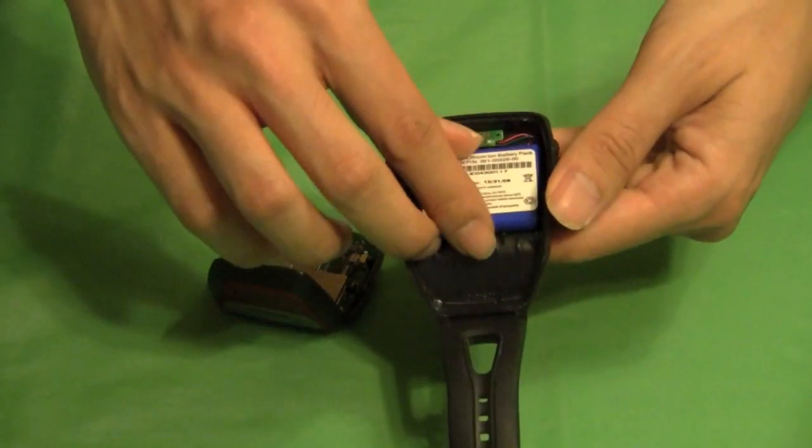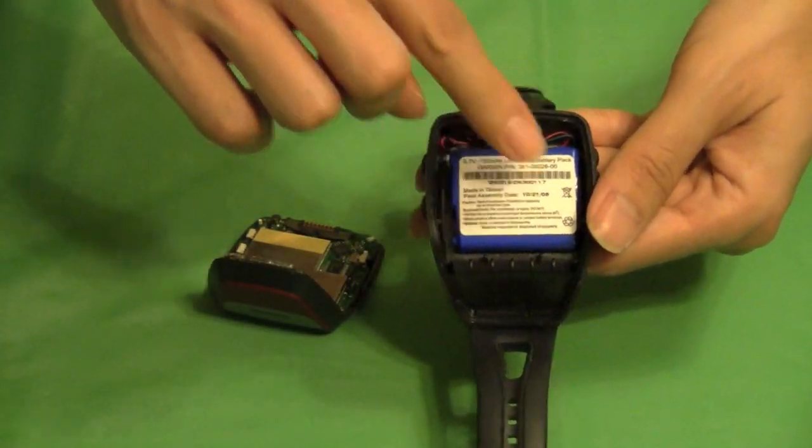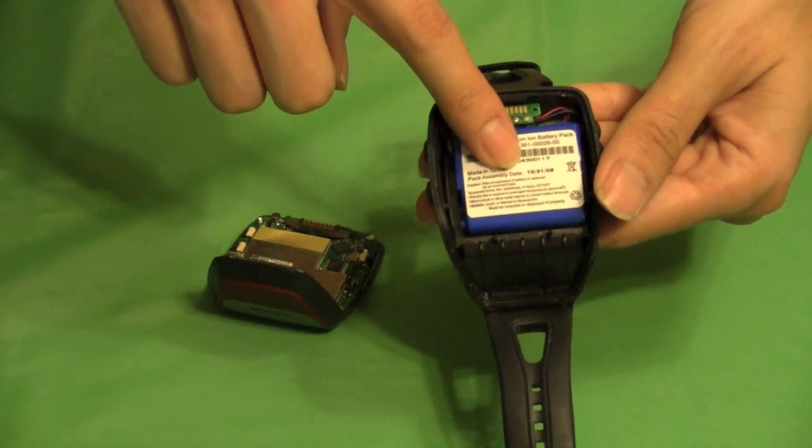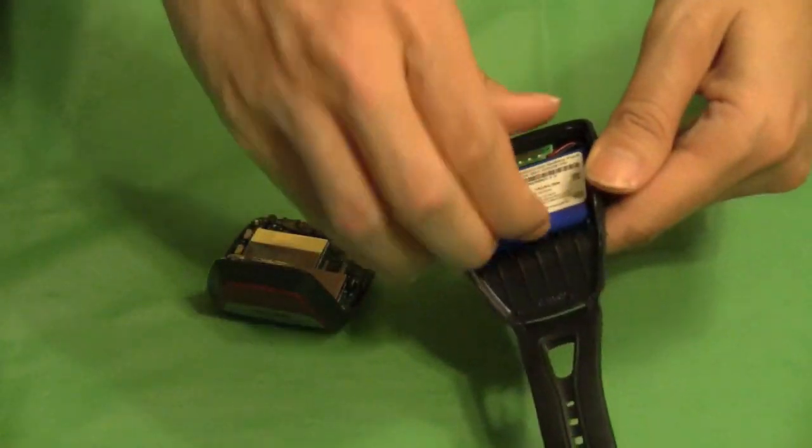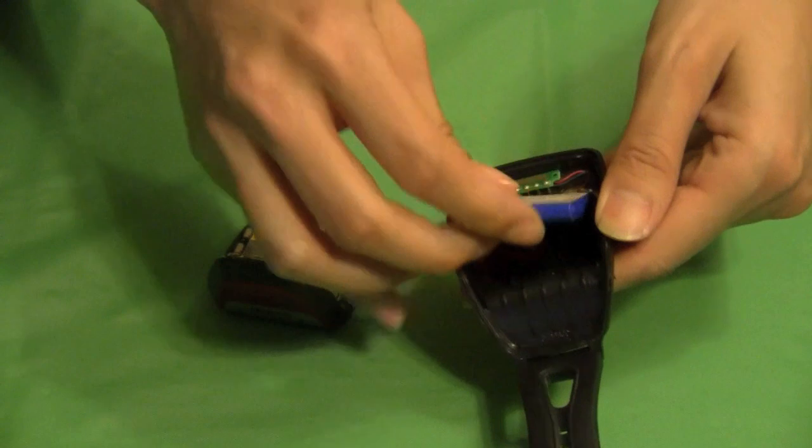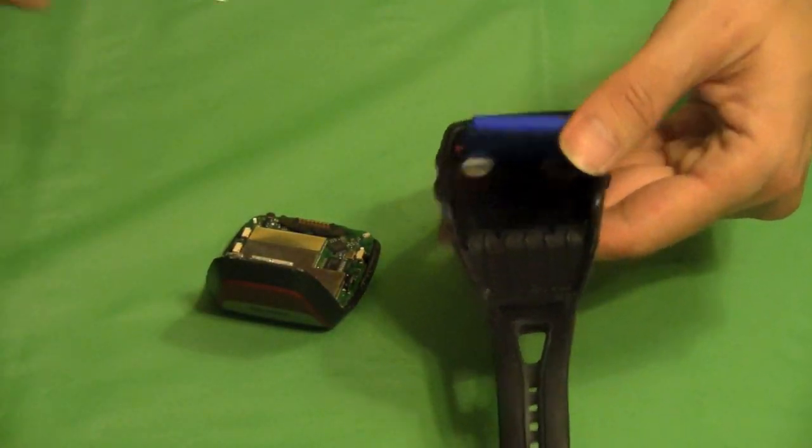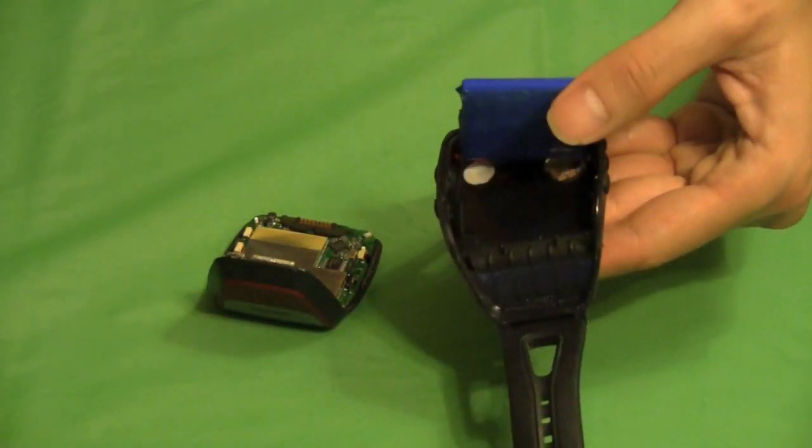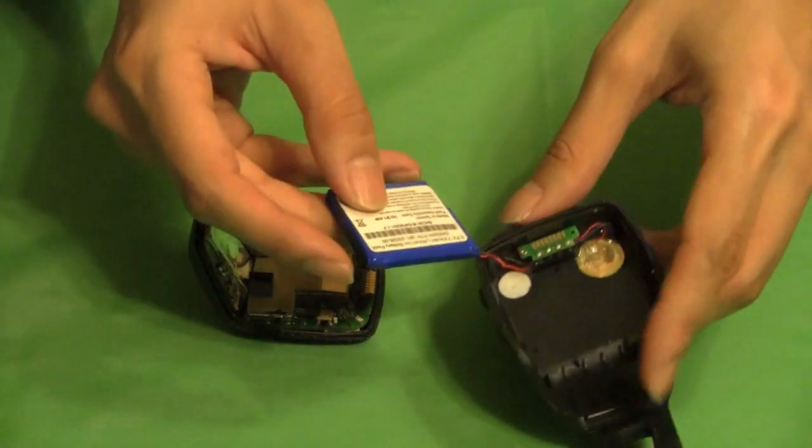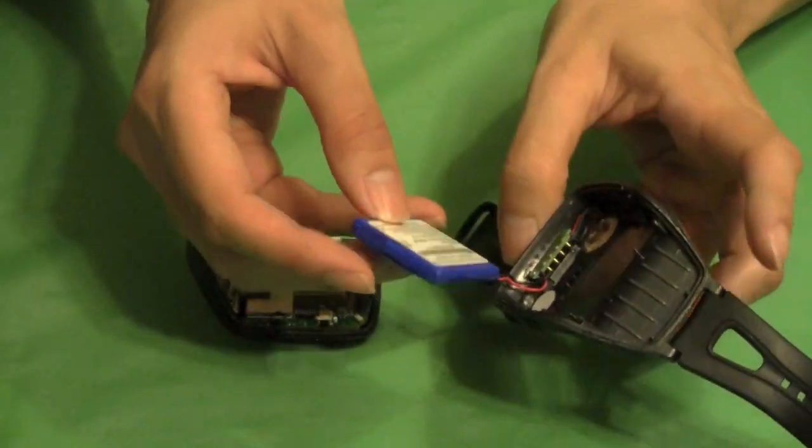The next step is this battery, the battery we will be replacing in this video. It was also glued down as well and I took my pry tool before I started this video and pried it loose. Now you can see the battery that we need to replace.